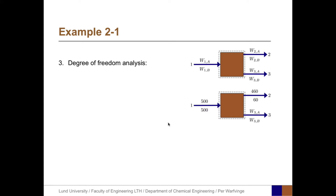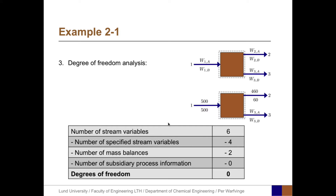The next step is to perform the degree of freedom analysis. The number of degrees of freedom is calculated starting with the number of stream variables, which is 6. The number of specified stream variables is 4. The number of mass balances we can set up is one for each component. That gives us zero degrees of freedom, which means this problem can be solved with the equations we have available.